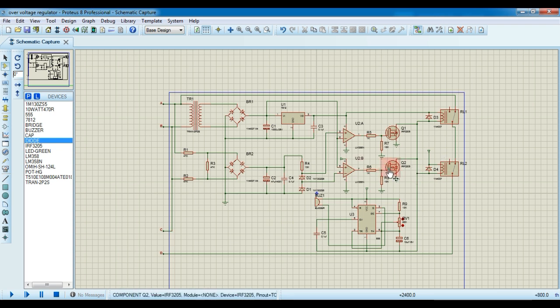So whenever the incoming voltage is either high or low, the system cuts the output connection using the relay configuration. And that is exactly what we have as we test the assembly.